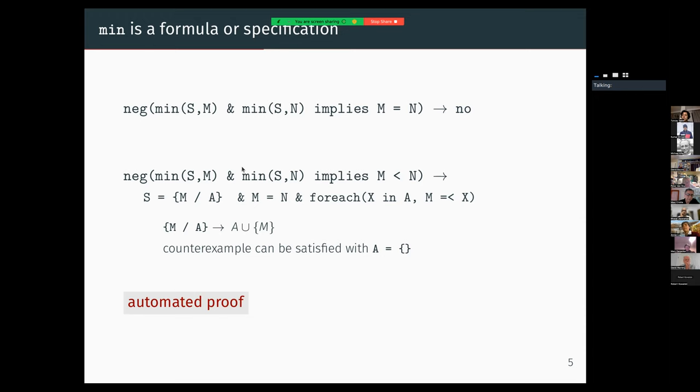If we call SetLog with something that is not actually a property, then it will return a counterexample. For instance, if we try to prove that the minimum of a set can be two different numbers, one less than the other, that's not true.